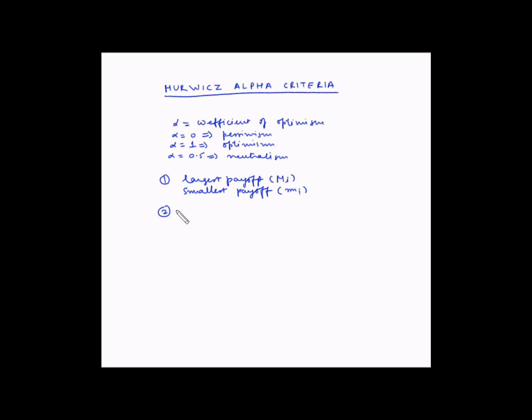Second step is to estimate the value of alpha. Third is to calculate the expected value for each strategy using the formula: EV = α × M_i + (1 - α) × m_i. And the fourth step is to select the strategy with the highest expected value as the optimal solution.